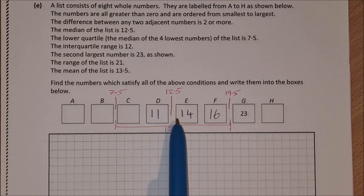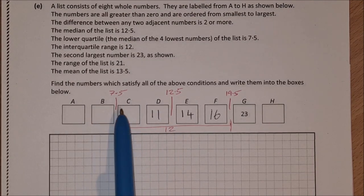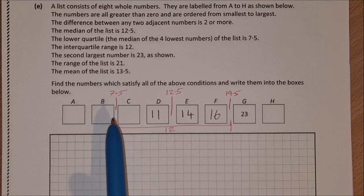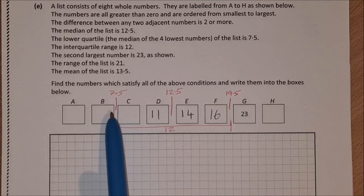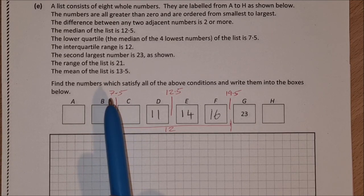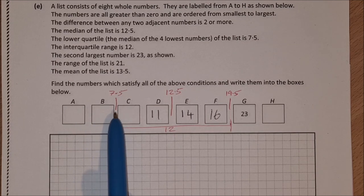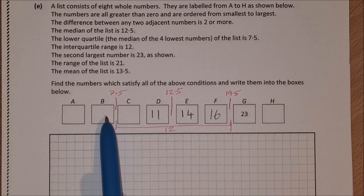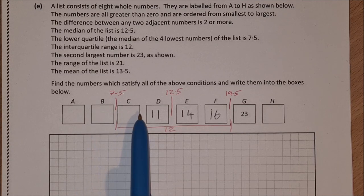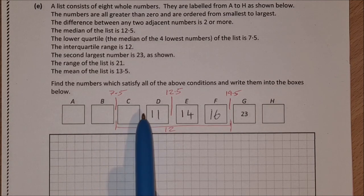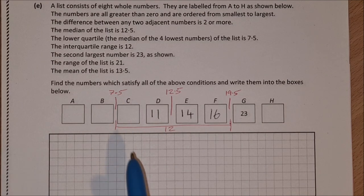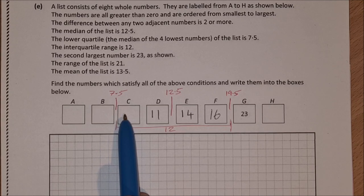Now I'm going to continue with this logic down the list here because I have 7.5 as the lower quartile. So B and C must add together to give 15, twice 7.5. So two numbers that add to give me 15—for example, 5 and 10. Now they won't work because the difference between 10 and 11 is only 1. So how about 6 and 9? Well, 6 and 9 would work. They add to give me 15.